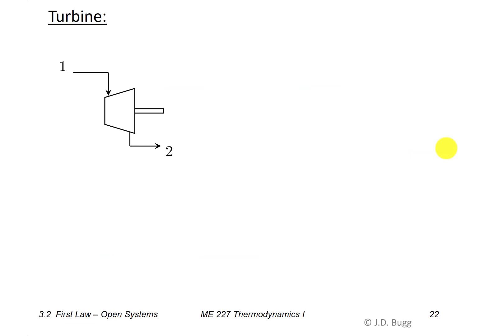We begin with a turbine, a very common component in the types of systems we'll be looking at. Our schematic symbol for a turbine is a trapezoid showing an expansion occurring, with an inlet at state 1 and an exit at state 2. A shaft is shown to remind us there is a work output from this turbine — a mechanical connection between the device and its surroundings so that a work transfer occurs.